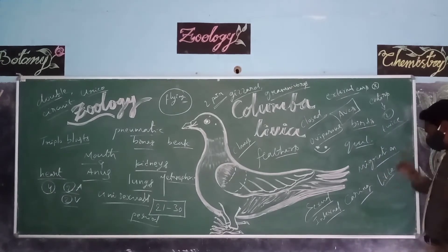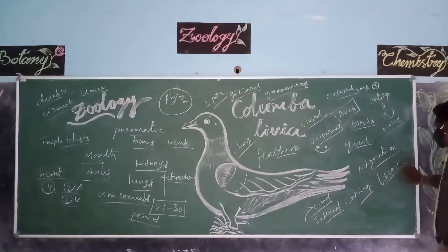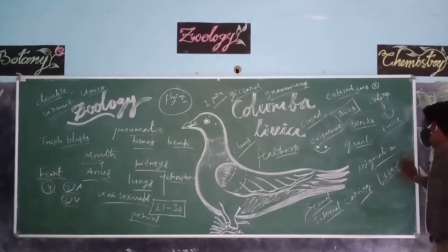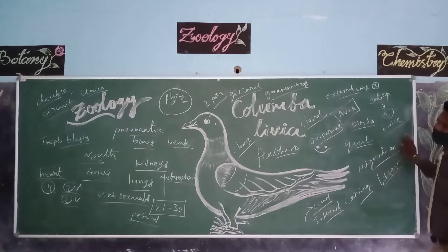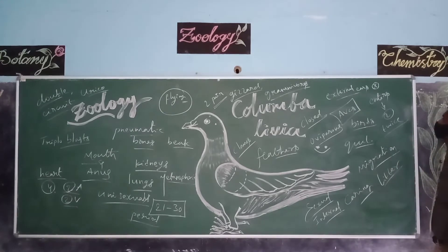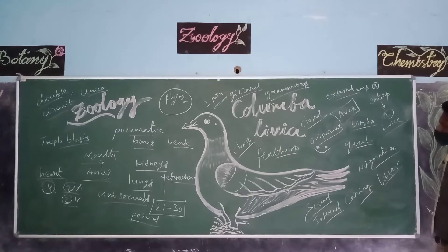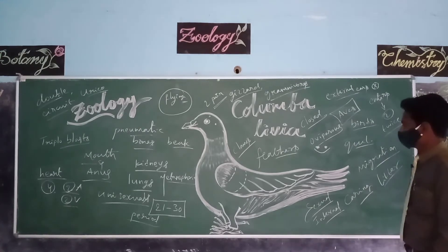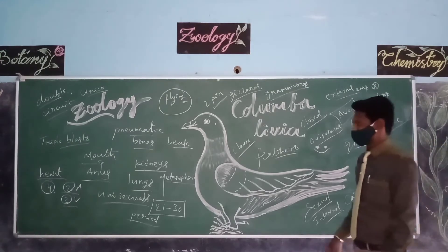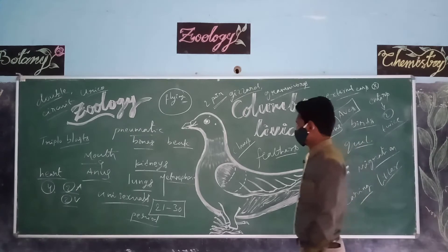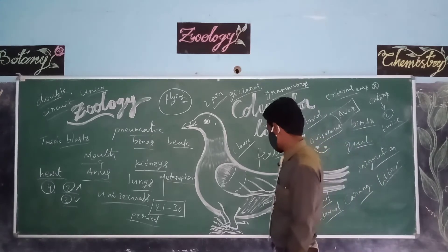The excreta of birds is known as litter. Especially, poultry litter is highly beneficial for crops in the form of manure. The litter of poultry or hens is highly economically valuable.